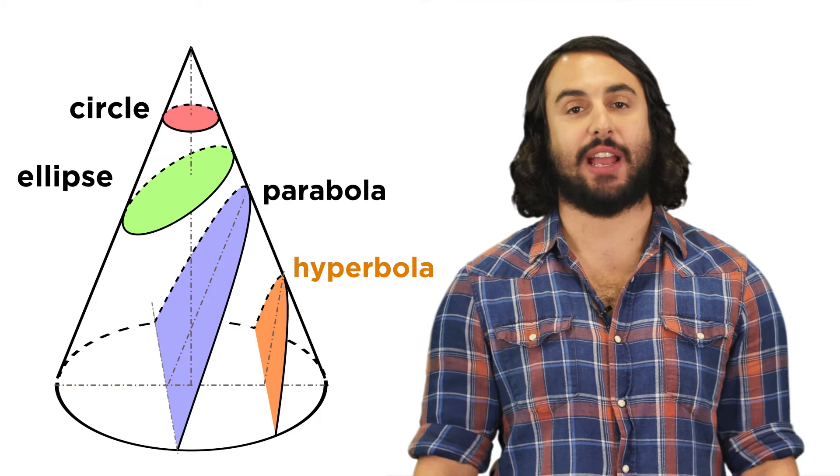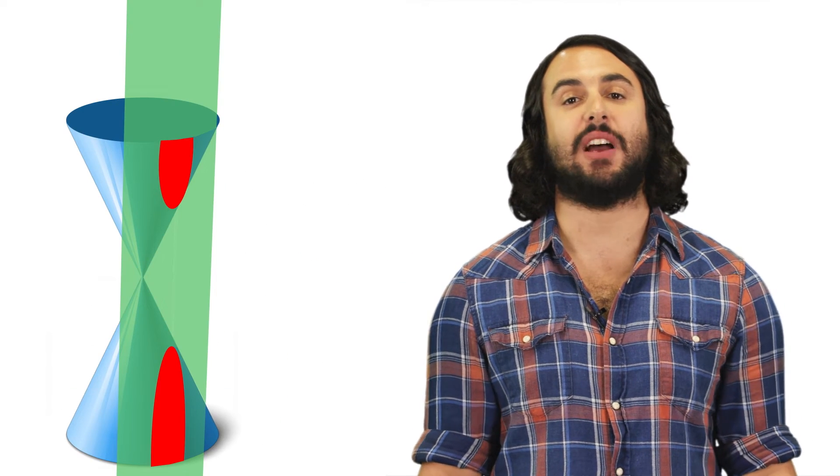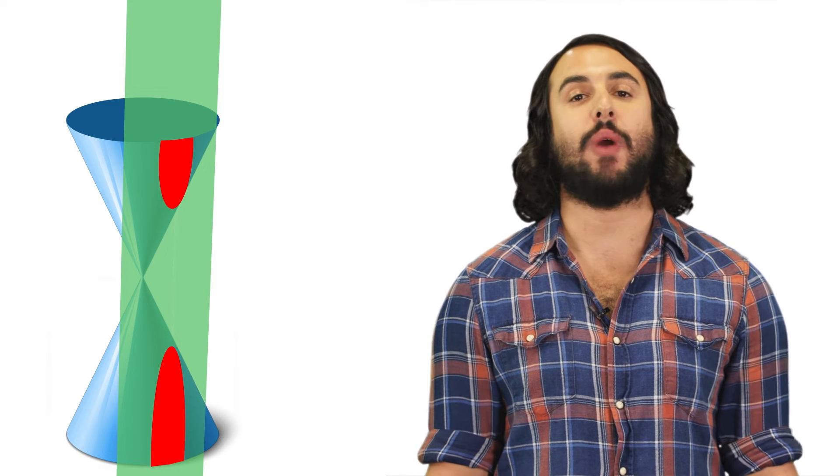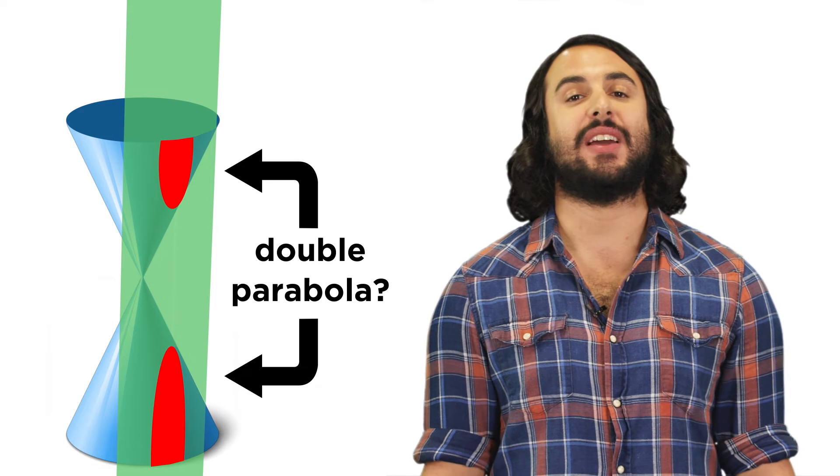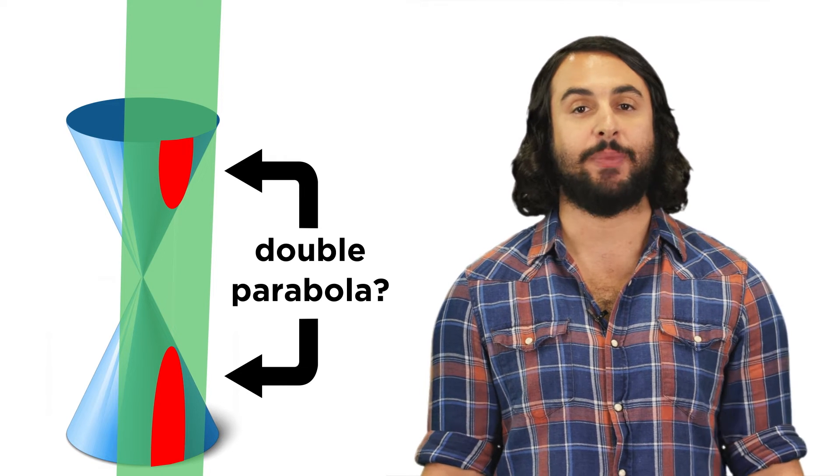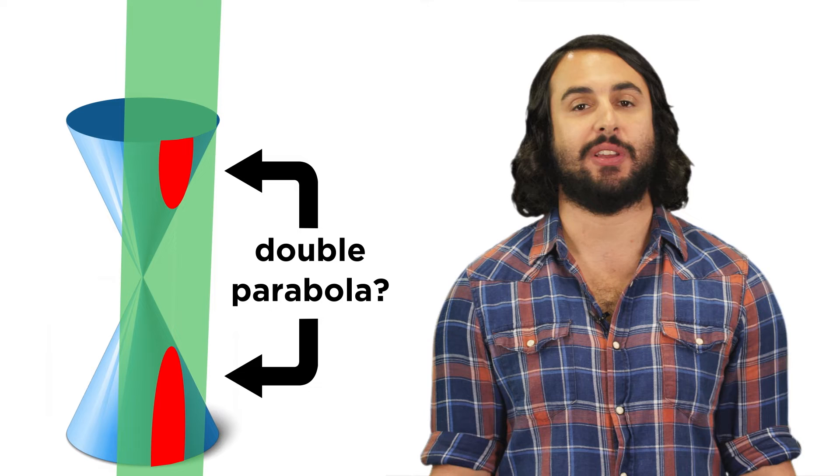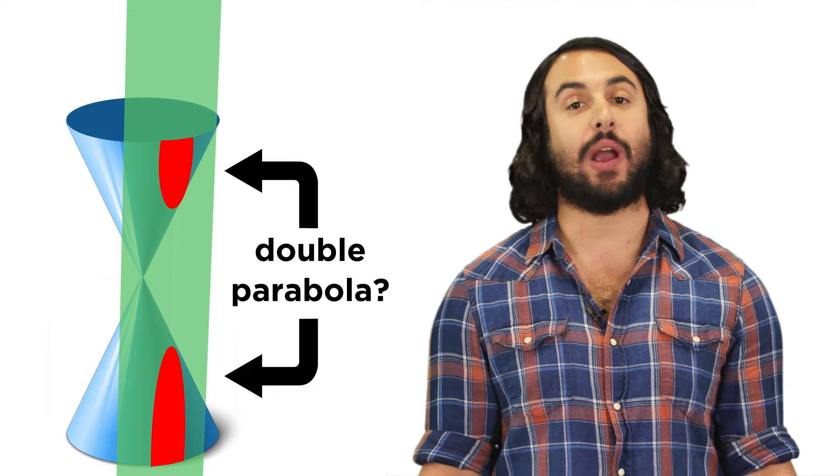We've made it to the last conic section, the hyperbola. This is the one that extends through the base of one side of the cone all the way through to the base of the other side of the cone, producing something that at first looks kind of like a double parabola with its two separate branches, although the shape is actually quite different.